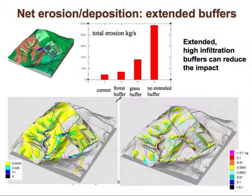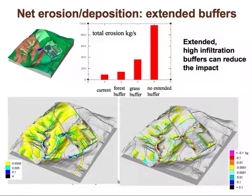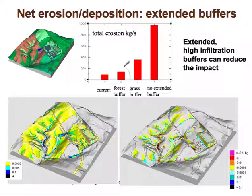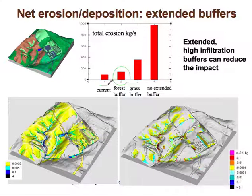We conducted a number of different experiments with check dams, small ponds, and other measures. We found that extending this buffer can improve runoff and will also have a great impact on minimizing erosion. By including an extended forested buffer, we can cut the potential worst-case scenario erosion to less than a quarter of what it would be, although it would still be higher than the current state if the forest covered the entire area.